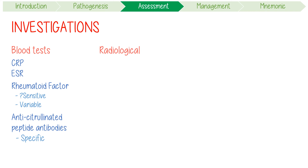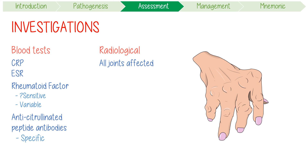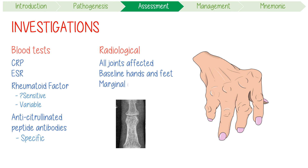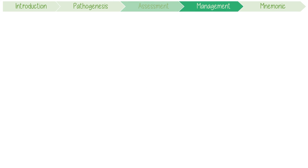Radiologic studies can be done to assess all joints affected, plus a minimum baseline x-ray of the hands and feet. Its hallmarks on x-ray include marginal erosions, which are well-defined areas of bone loss at the edges of joints.